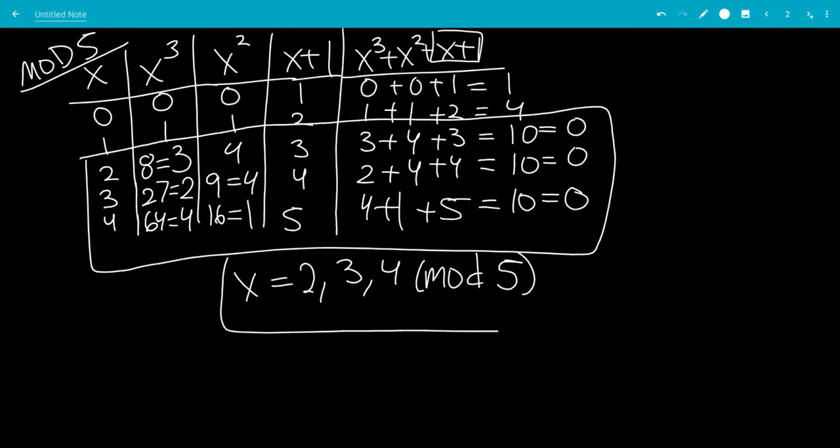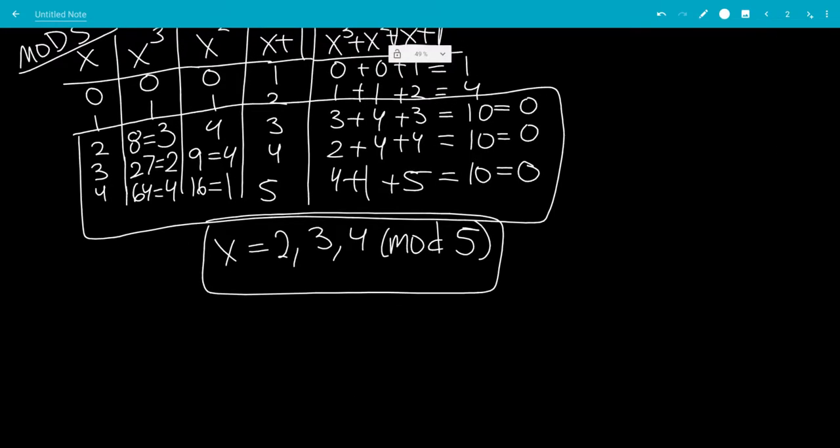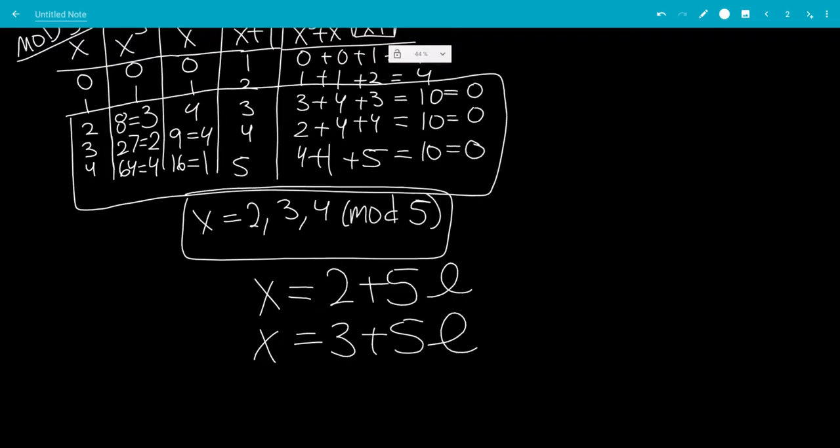So we can write this as, so that's the answer. So we can also write this as x equals 2 plus 5L, x is 3 plus 5L, and x equals 4 plus 5L. And L, let's write that again, L is an integer.